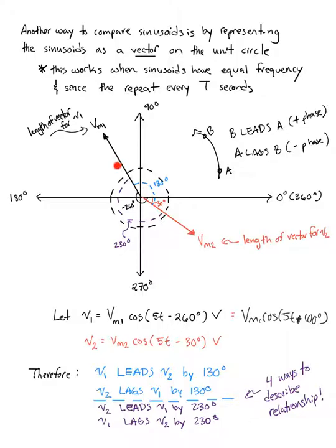If we keep going around, we can also say v2 leads v1 by 230 degrees. Going the opposite direction clockwise, we can say v1 lags v2 by 230 degrees or v2 lags v1 by 130 degrees. We have four ways to describe this relationship, all equivalent. It's important to understand how to relate the words lead and lag to a physical representation of the difference between the two.